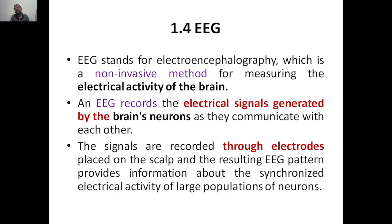Why do we use EEG? To check whether the electrical activity of the brain is proper or not. In cases of coma or severe accidents, we need to check whether the brain is functioning properly. We cannot just open and check, so we simply measure the electrical activity of the brain.